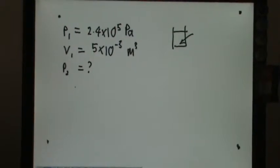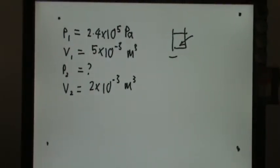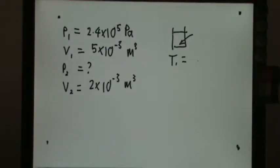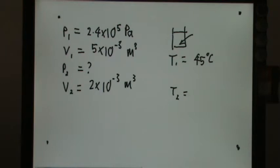They give you the value of the volume compressed to 2 times 10 power of negative 3 meter cube. And the initial temperature was 45 Celsius raised up to 250 Celsius.